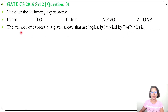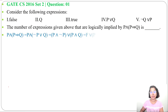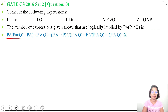So it is asking how many expressions from this can be implied by P and P implies Q — meaning P and (P implies Q) as a whole implies which expressions will be true. Let me first simplify this. You can also do it without simplifying, like taking P and (P implies Q) directly.